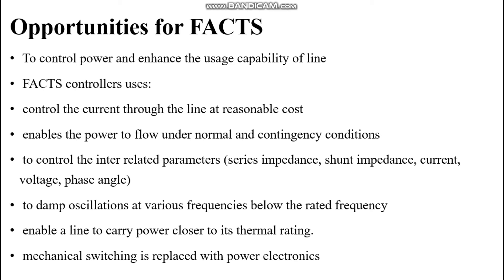This increases the efficiency of the power system and minimizes oscillations at frequencies below the rated frequency. To enable a line to carry power closer to its thermal rating, insulators and lightning arresters are used. Mechanical switching is replaced with power electronics — GTO controlled reactors, SCRs, GTOs, and IGBTs — which have many applications in power systems to improve the efficiency of the transmission system.